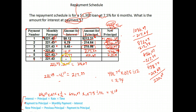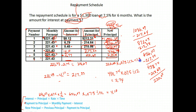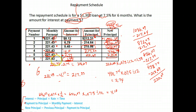The question was: what is the amount of interest for payment six? To find that, you take the previous balance — $220.05 — times the interest rate 0.075, divided by 12. So we take $220.05 times 0.075 divided by 12, and we get $1.38. So the amount of interest owed on this last payment is $1.38. That is the answer to what's the amount of interest for payment six.